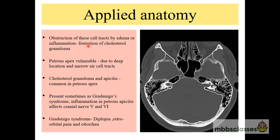If the petrous apex is pneumatized and gets infected from the middle ear cavity through this air cell tract, it can cause inflammation of the petrous apex — that is petrous apicitis. If the petrous apex is inflamed, sometimes it can lead to Gradenigo syndrome: inflammation in the petrous apex affecting cranial nerves 5 and 6, with presentation of diplopia, retroorbital pain, and otorrhea.